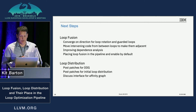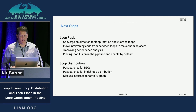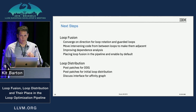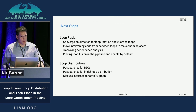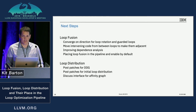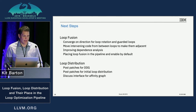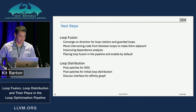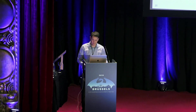Next steps: converge on a direction for loop rotation and guarded loops, then land the couple of ready patches for fusion. Additional work is ongoing to make fusion more aggressive — moving statements, peeling loops. For loop distribution, Bardy is anxious to post the DDG implementation for review, and we'll have a dev-list discussion on the affinity graph idea before going much further.